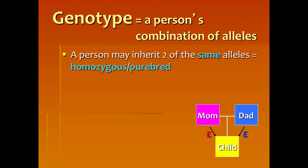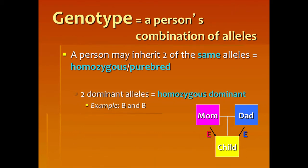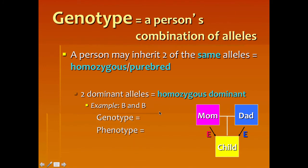A person may inherit two of the same alleles, and in genetics we call this homozygous. The prefix 'homo' in Latin means 'the same.' If I get a big B from mom and a big B from dad, they are both dominant — we call that homozygous dominant. Homozygous dominant is when you have two dominant alleles, written as big B, big B. That is the genotype, and the phenotype would be brown eyes. Because these two are the same and both capital letters, we call that homozygous dominant. Genotype is how we write it down; phenotype is how it looks.